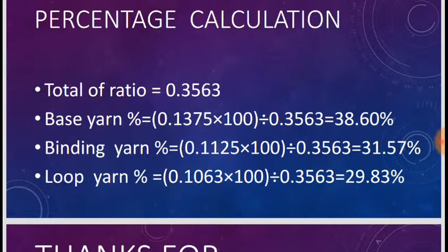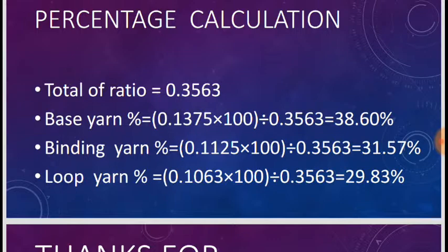Base yarn percent equals 0.1375 multiplied by 100 divided by 0.3563 = 38.60 percent. Binding yarn percent equals 0.1125 multiplied by 100 divided by 0.3563 = 31.57 percent. Loop yarn percent equals 0.1063 multiplied by 100 divided by 0.3563 = 29.83 percent.